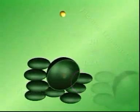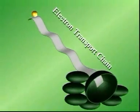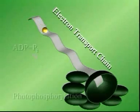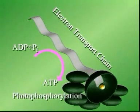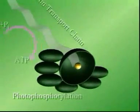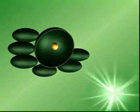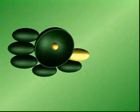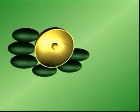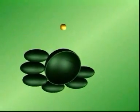The high-energy electron moves through an electron transport chain, which functions like the one found in respiration, to produce ATP. The electron eventually joins a second antenna assembly, where it replaces an escaped electron which has entered another electron transport chain. The energy released in this second electron transport chain aids in the formation of NADPH.